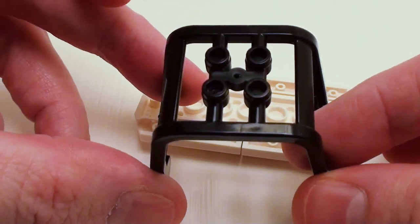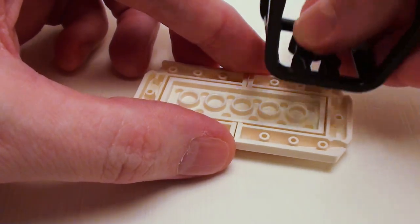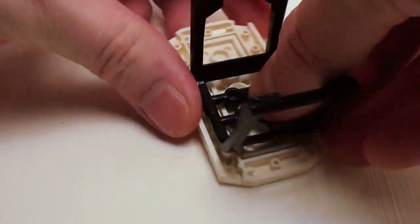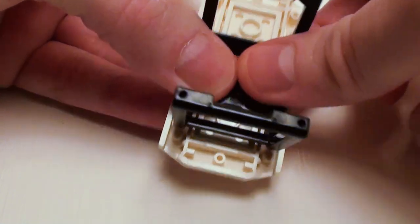I'm going to take one of these 4 by 6 cage assemblies. I'm going to set this right here where it's hanging over by one stud. That's going to be the front.